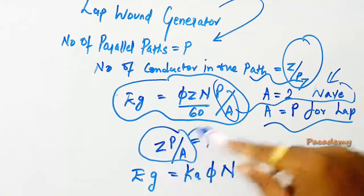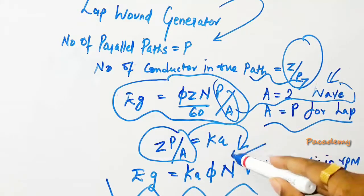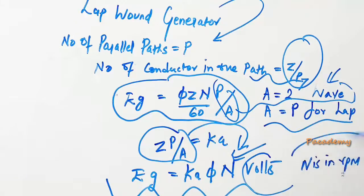If Z by A is taken as a constant KA, then the equation of the generator becomes EG equals KA𝜙N volts, where N is in RPM.